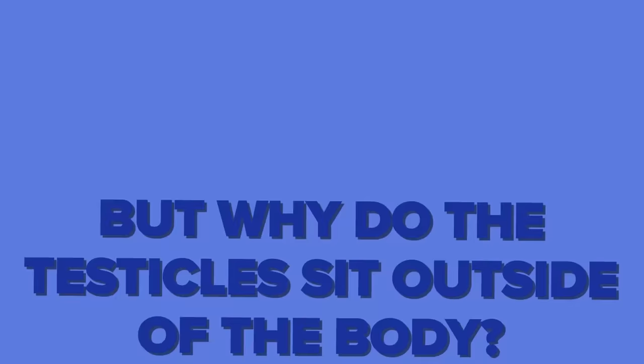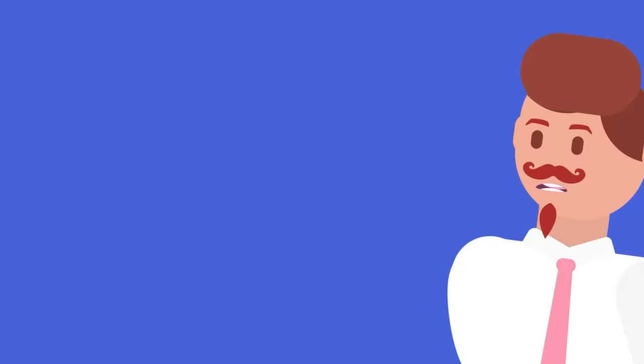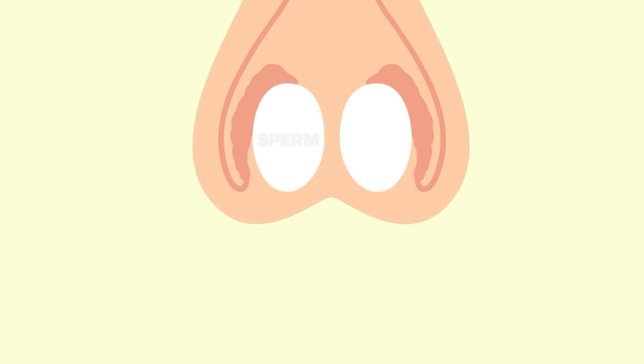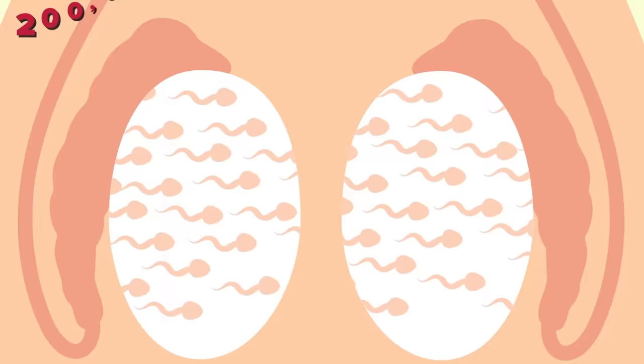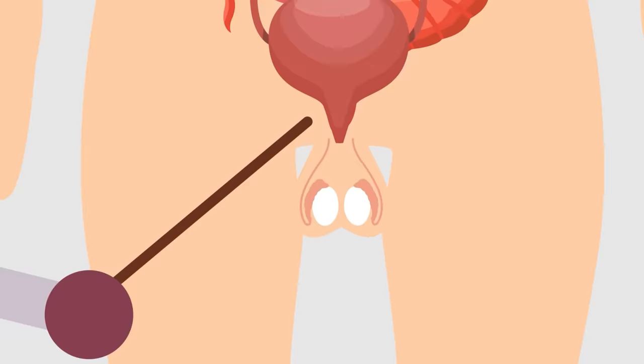But why do the testicles sit outside of the body? They are incredibly sensitive and vital to the reproduction of our species, so why aren't they more protected? The answer is both surprising and weird. The main purpose of the testes is to produce sperm. They actually serve no other purpose but to produce sperm and secrete hormones. In fact, the average human testicles produce around 200 million sperm each day. But why is the organ that ensures the continuation of our species so exposed? Why aren't they inside the body where they can be protected?